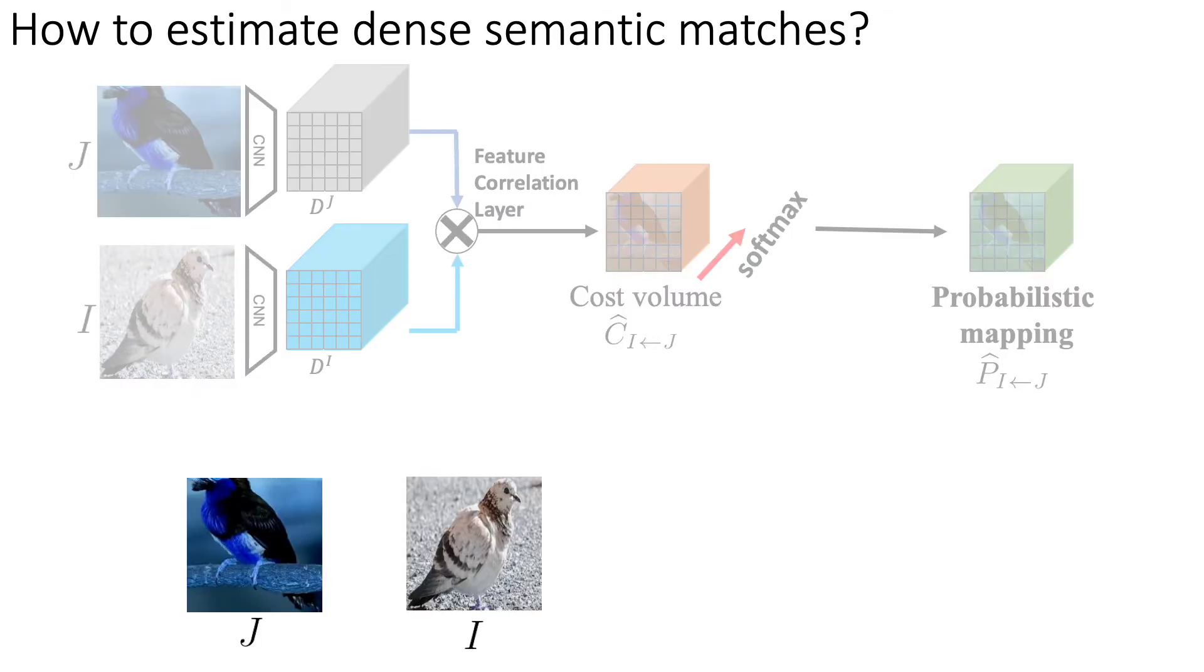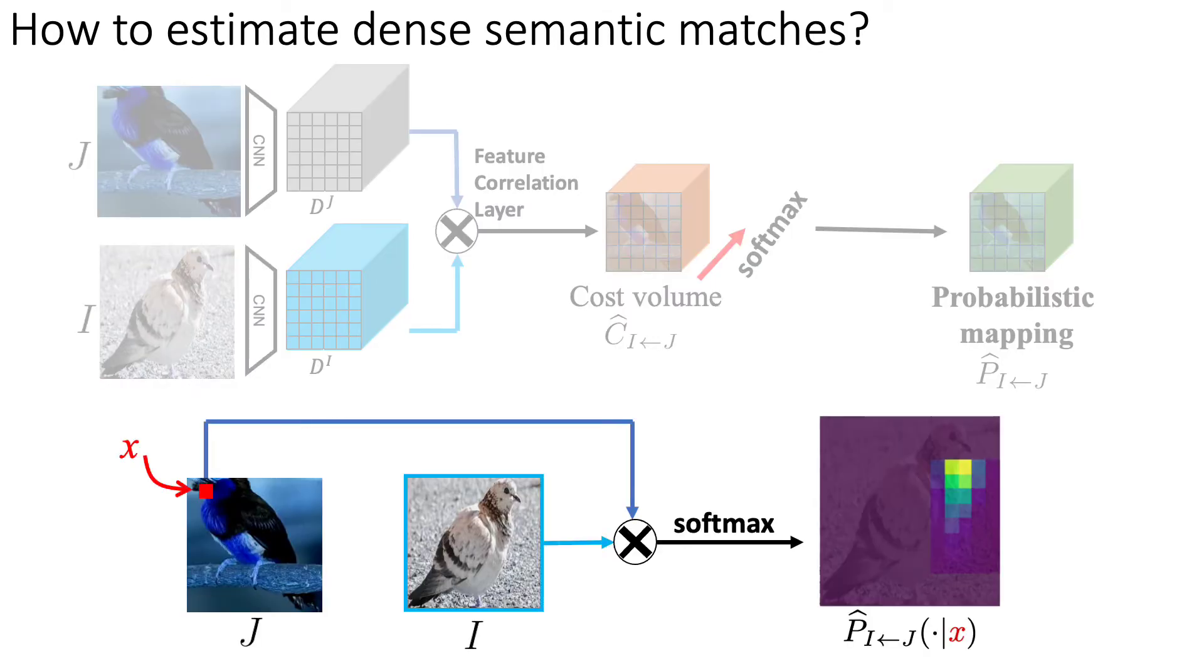Given a position x in frame j, the probabilistic mapping at x encodes the entire conditional probability distribution of where x is mapped in image i. During inference, matches are obtained as the argmax of the probabilistic mapping for each pixel of the images.